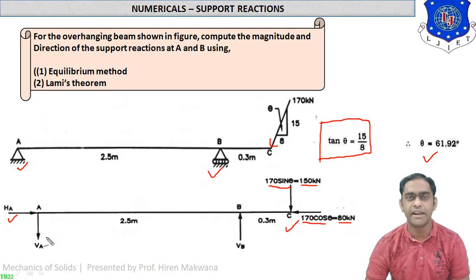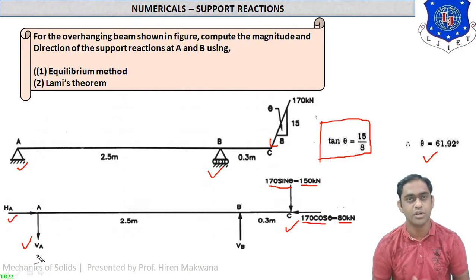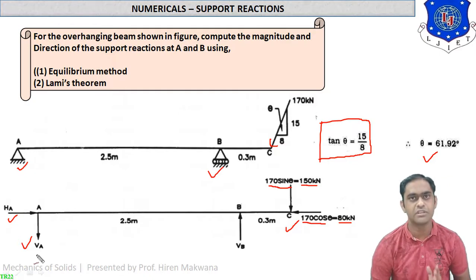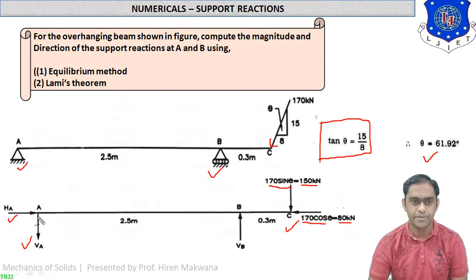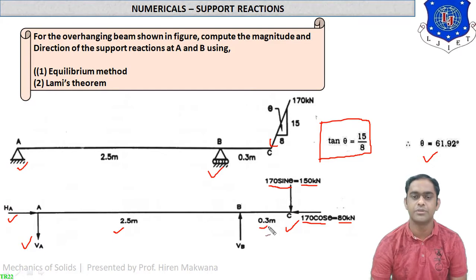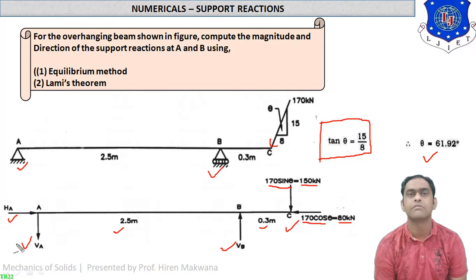VA is shown going downward in the figure, meaning when we calculate it, its value may come out negative. You can also start with the upward direction and get a negative value — it doesn't matter. The beam length between A and B is 2.5 m, and between B and C is 0.3 m. Support reaction VB is at point B and VA is at point A. Only one inclined force is present at point C.